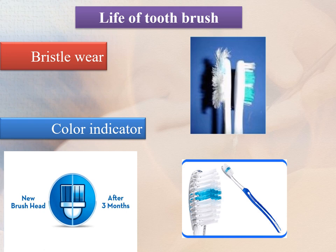Toothbrushes should be changed once every three months. Bristle wear is a clear-cut indicator for changing a toothbrush — as we can see in the picture, frayed bristles lead to decreased cleaning efficiency. Nowadays, modern brushes have incorporated color indicators which guide the user when to change the brush.